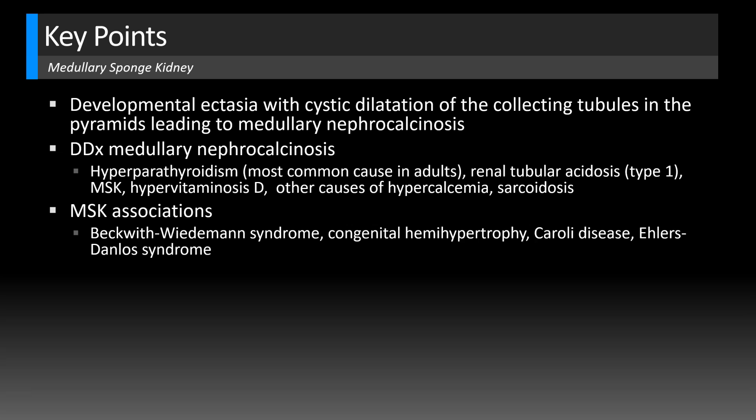For 300 bonus points, what type of choledochal cyst is Caroli disease in the Todani classification? Yes — type 5. Excellent.